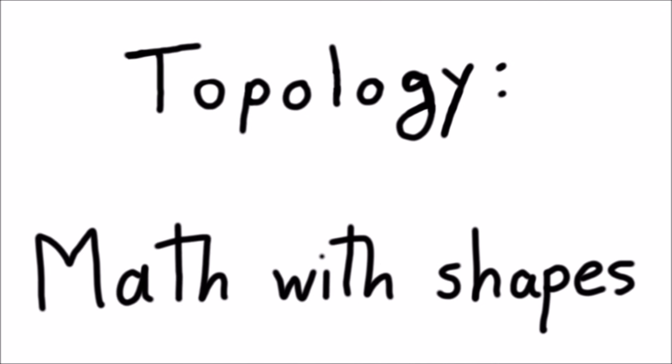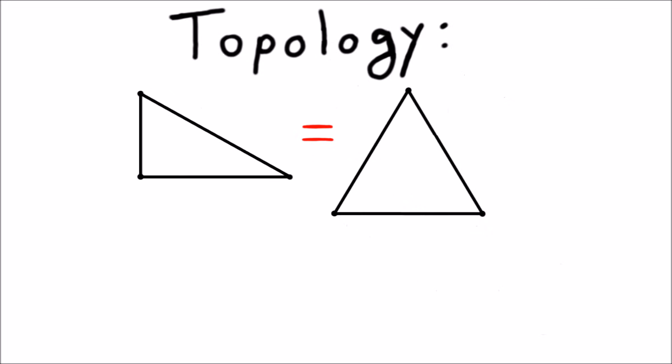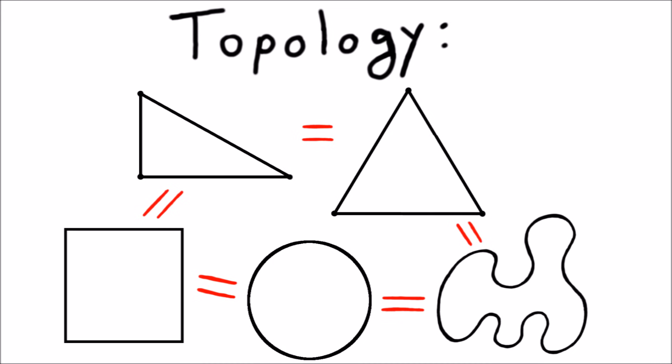We study shapes, but we pretend that all the shapes we deal with are made of really squishy rubber. So to a topologist there's no real difference between a right triangle, an equilateral triangle, a square, a circle, or a crazy messed up circle. When we say circle we think rubber band.